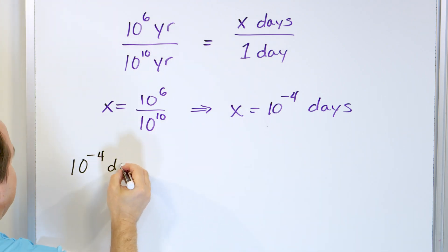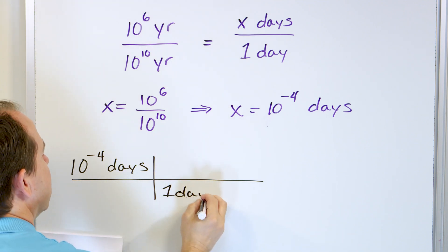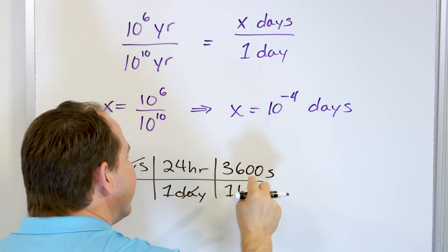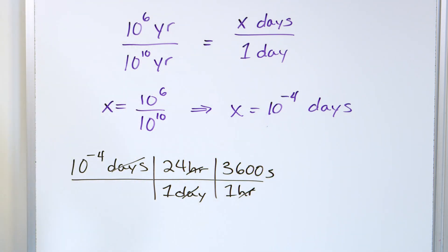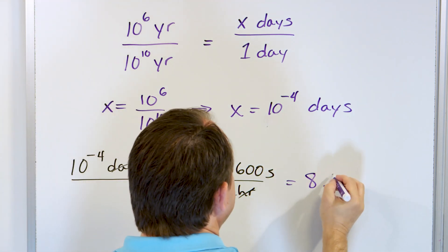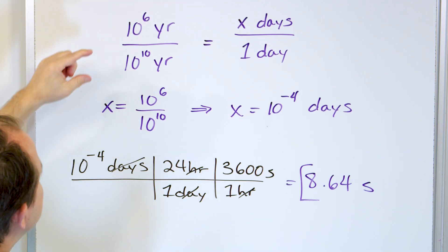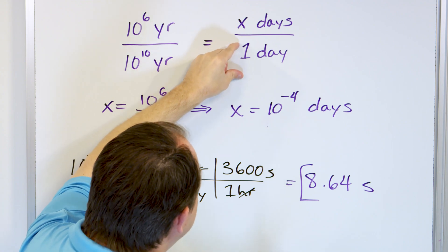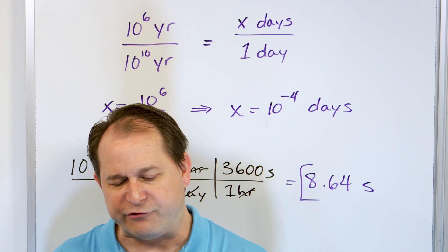We take 10 to the minus 4 days, then multiply by 24 hours per day — days cancel. Then I remember there are 3,600 seconds in one hour, since 60 minutes times 60 seconds equals 3,600 — hours cancel. So when you take 10 to the minus 4, multiply by 24, then multiply by 3,600, you get 8.64 seconds. On this timescale, if the age of the entire universe equals one day, humanity has only existed for about 8 seconds. It's a straight ratio and proportion problem.